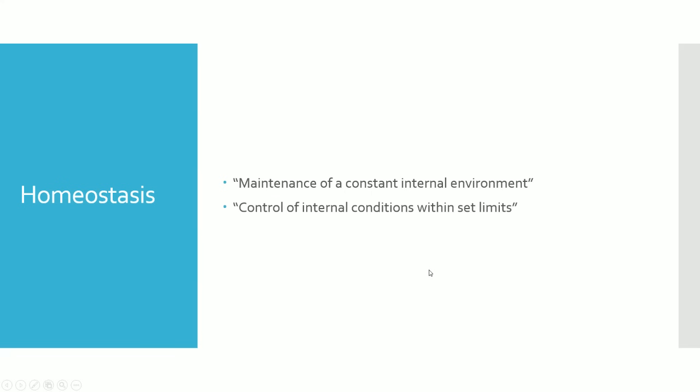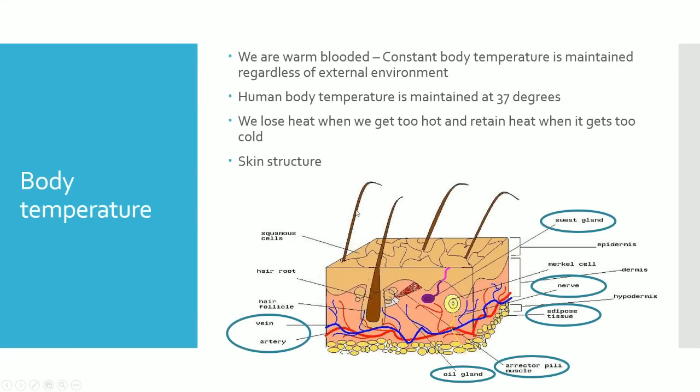We need to keep our temperature constant. In the human body, we maintain temperature at 37 degrees. Homeostasis is about keeping the entire internal environment constant, and body temperature is just one example. For IGCSE Cambridge, the two main examples you need to know are body temperature and blood glucose, and how they are maintained.